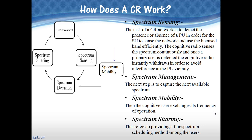Cognitive radio is also called a dynamic spectrum management scheme. Spectrum sensing is the first and the most basic step of the cognitive radio cycle. The next step is to capture the next available spectrum, which is called spectrum management. Then the cognitive radio user exchanges its frequency of operation, which is called spectrum mobility. The last step in the cognitive cycle is spectrum sharing, which refers to providing a fair spectrum scheduling method among users.